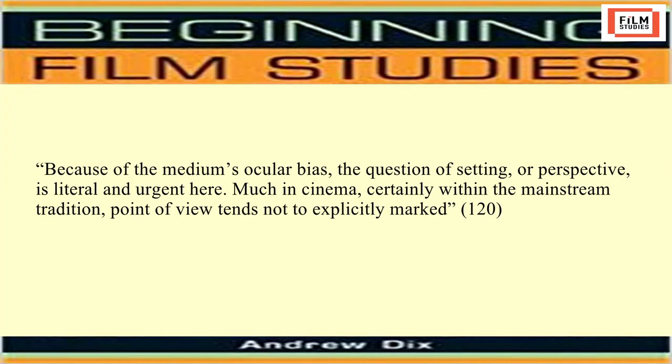Andrew Dix explains the operation of power in cinema: 'Because of the medium's ocular bias, the question of setting or perspective is literal and urgent here. Much in cinema, certainly within the mainstream tradition, point of view tends not to be explicitly marked.' An objective shot, according to Francesco Casetti, is a nobody's shot which suggests a disembodied perspective that does not prioritize anyone's viewpoint. A subjective shot, or point-of-view shot, represents the perspective of one of the characters in the frame. Not all characters in a movie are given viewing positions — it is in this allowance and denial of viewing positions that the power distribution of cinema lies.